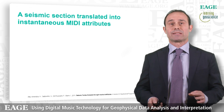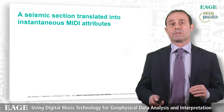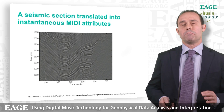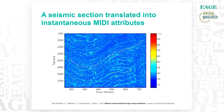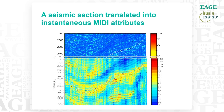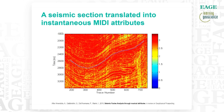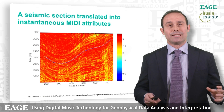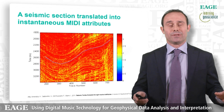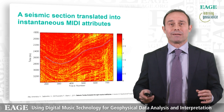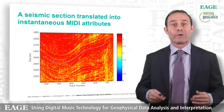I would like to show you an example. This is a seismic section that was translated into instantaneous MIDI attributes. For instance, here you have attributes linked with the length of the musical notes, with the sound intensity, or with the instantaneous frequency content. We can combine all these attributes, including attributes that are unique to music and have no correspondence in standard geophysical attribute approaches, such as melodic patterns, harmonic patterns, or rhythmic patterns.